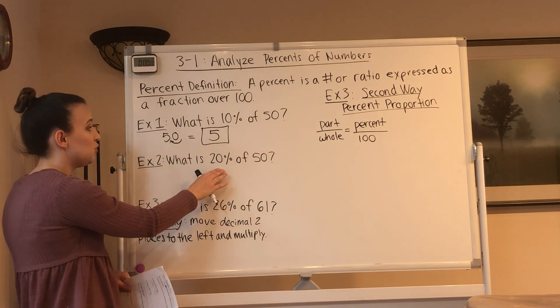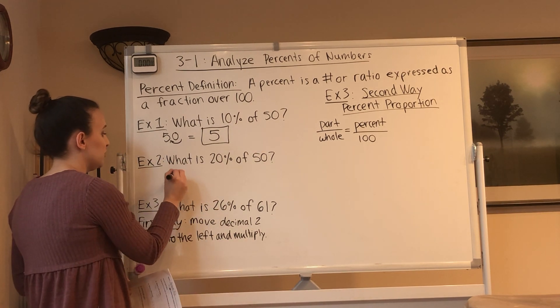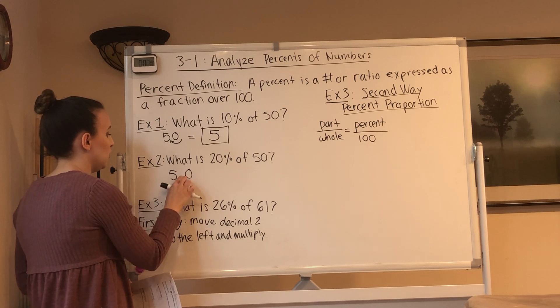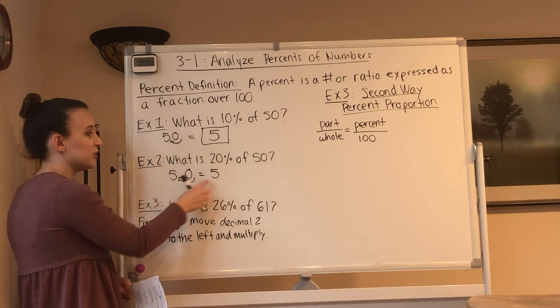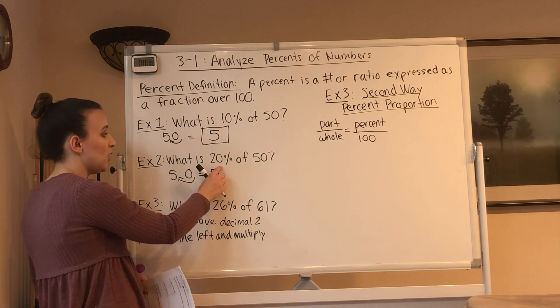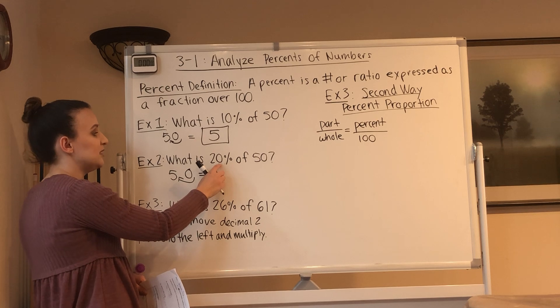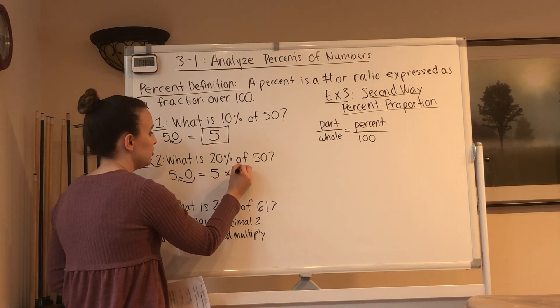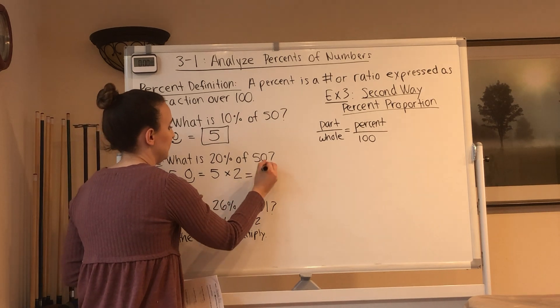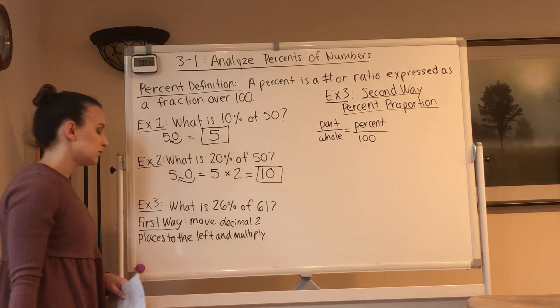Now, if we want to do 20% of 50, you start off with moving the decimal one place, and that gives you 5. That's 10% of 50. If we need 20% of 50, well, that would be double of 10%, right? So we just multiply by 2 and we get 10.